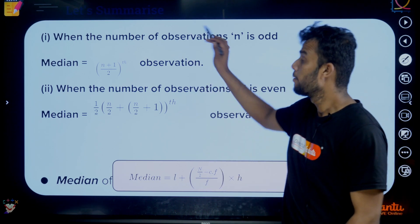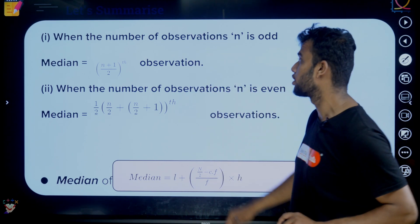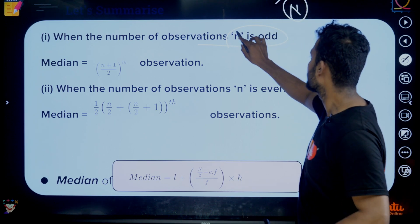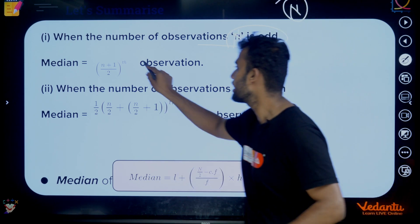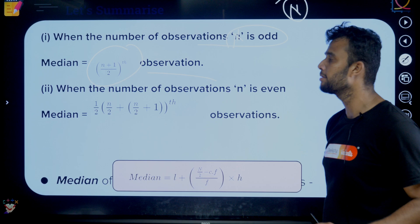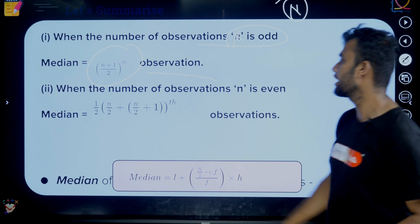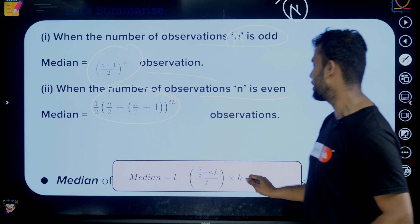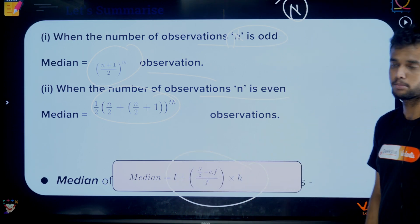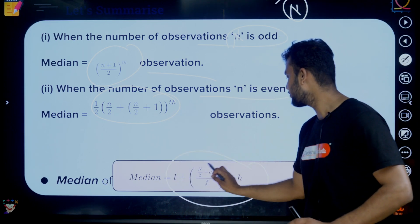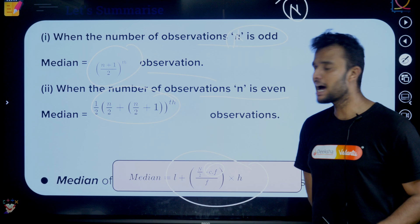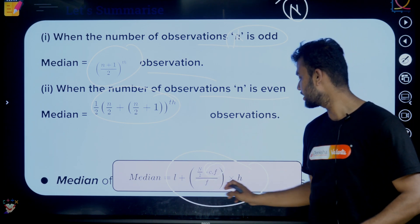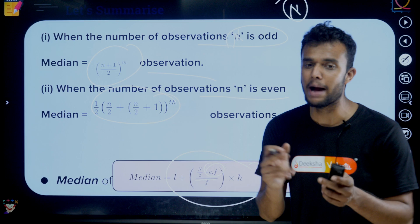Median depends on the number of observations n. If n is odd, median = value at (N+1)/2 th position. If n is even, use the formula: Median = L + [(N/2 − CF) / F] × H, where CF is cumulative frequency and H is the class width (bandwidth).